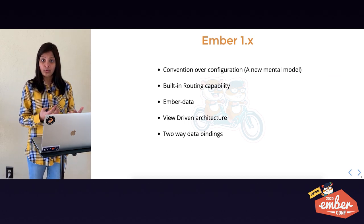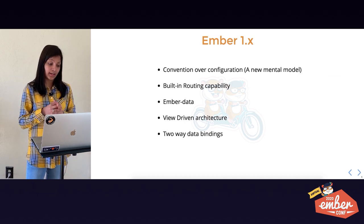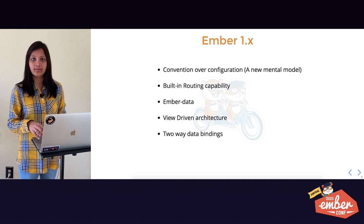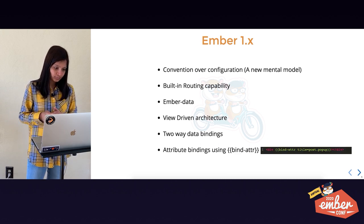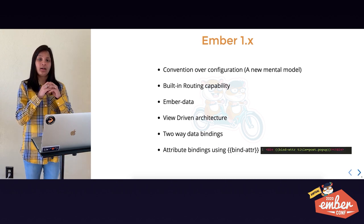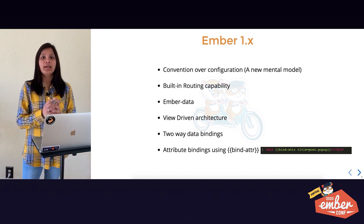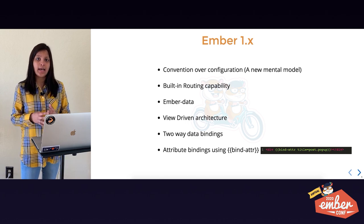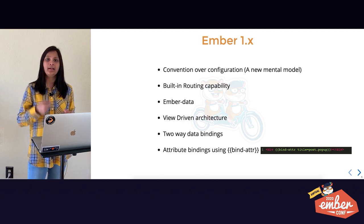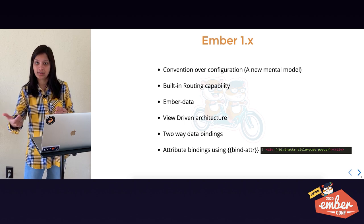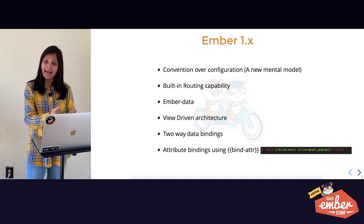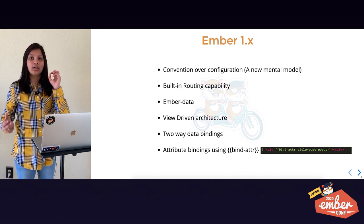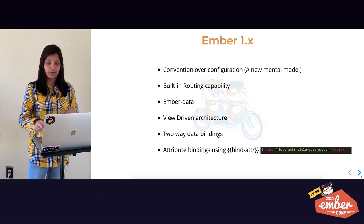Ember 1.x also had the capability of two-way bindings, which was really dynamic for any framework to have at that time. We also had support for attribute bindings — with the `bind-attr` syntax you could associate your component or view's property directly on the template dynamically. So if you had a backing JS class for a component with a template and wanted to associate attribute values dynamically, bind-attr let you do that right on the template.